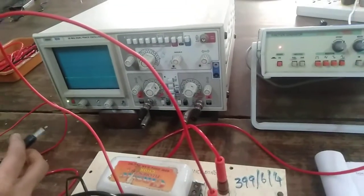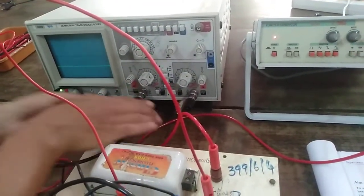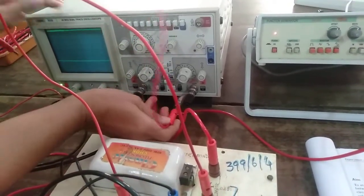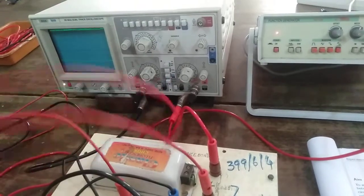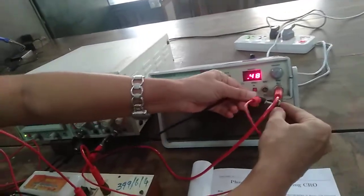Coming to the CRO, we have 2 channels - channel X and channel Y. Let me just take 2 probes from channel X and channel Y - the ground of these 2 has to be shorted and let me connect it to the ground of the audio oscillator.